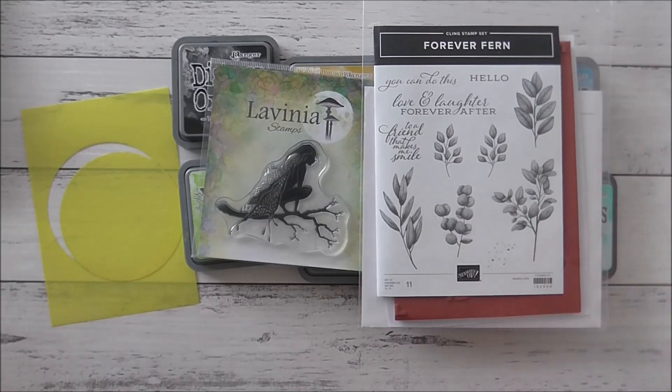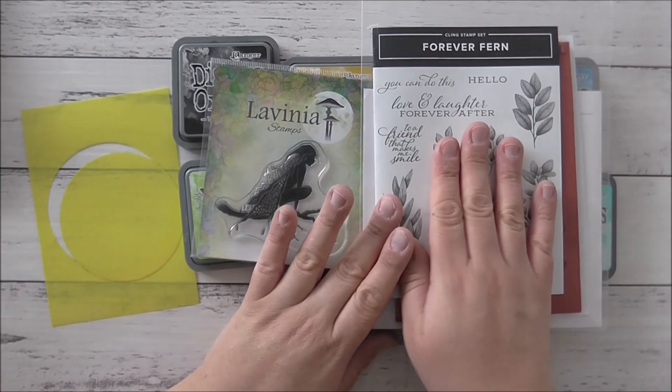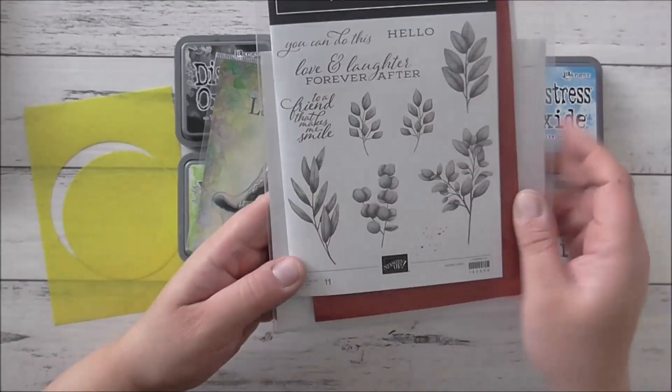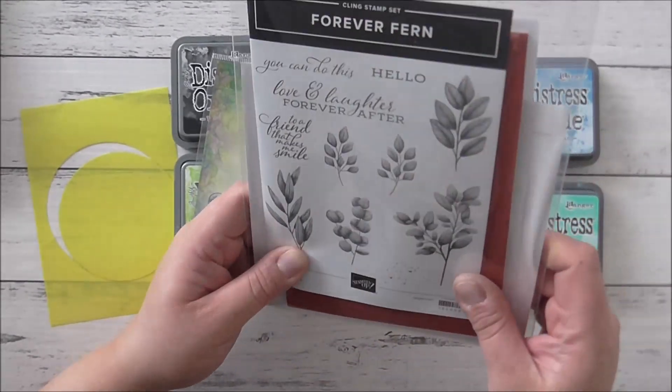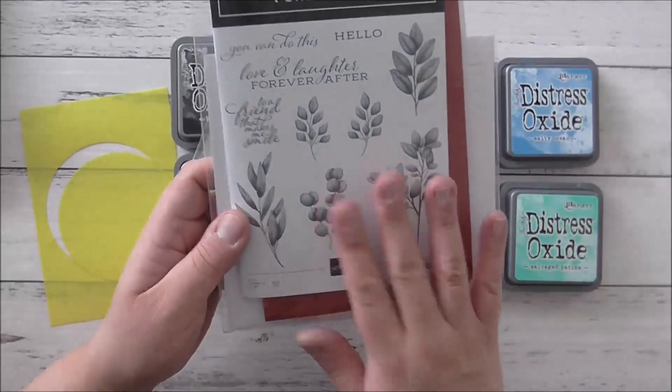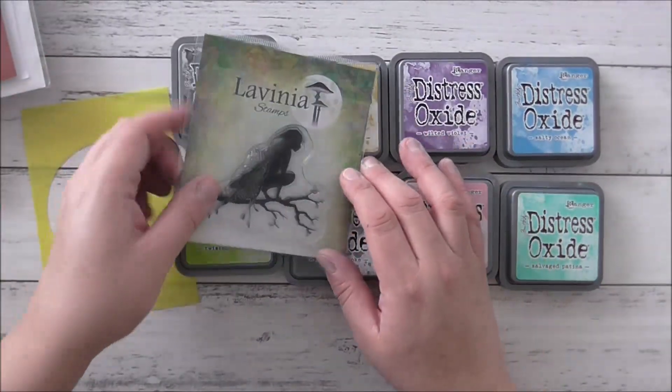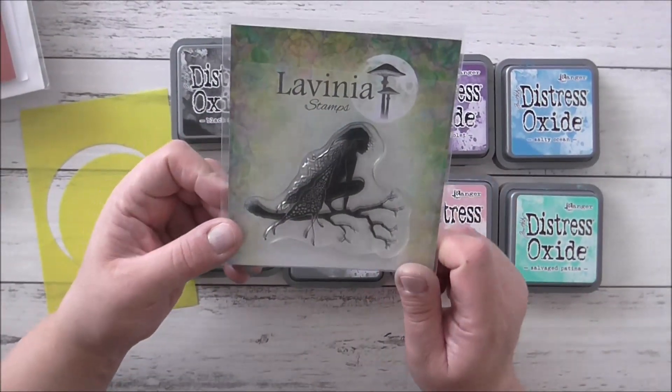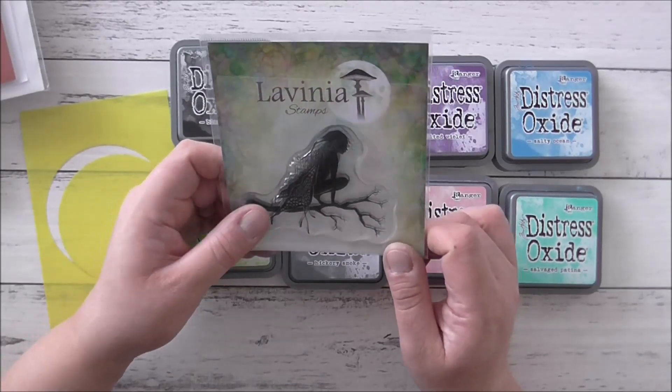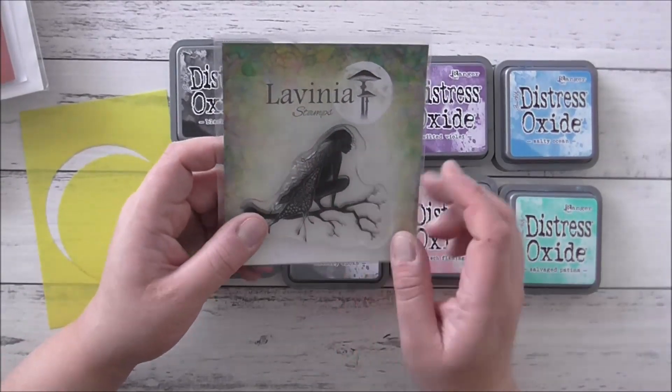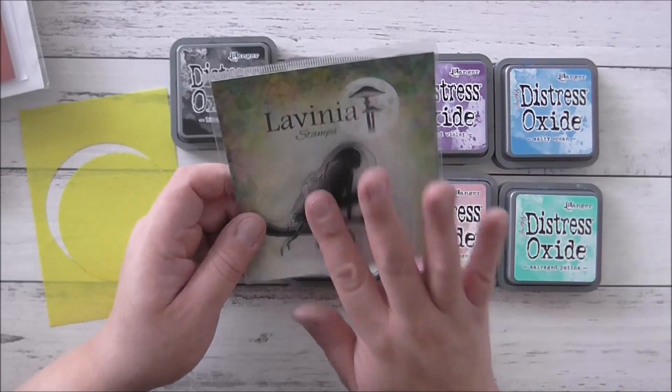What I'm going to be using is Stampin' Up's Forever Fern - I love this stamp set. I have the matching dies as well, but I'm just going to use the stamp set today. I'm also using this beautiful Raven stamp by Lavinia Stamps that my friend got me earlier this year. I absolutely love it - thank you Connie if you're watching.